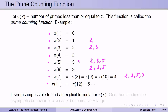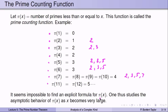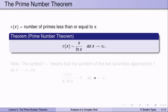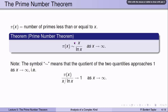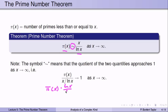It seems impossible to find an explicit formula for π(x). One therefore studies the asymptotic behavior of π(x) as x becomes very large — for example, how many prime numbers are there roughly that are less than a million. The prime number theorem says that π(x) is asymptotically x divided by the logarithm of x. That asymptotic symbol means that the quotient π(x) divided by x/ln(x) goes to 1 as x goes to infinity, or equivalently π(x) · ln(x)/x goes to 1 as x goes to infinity.